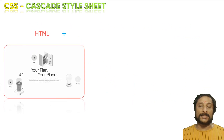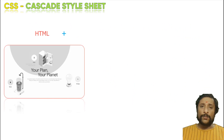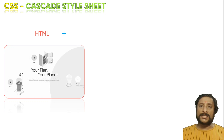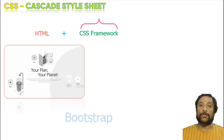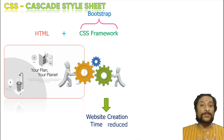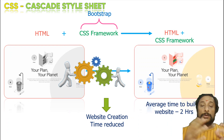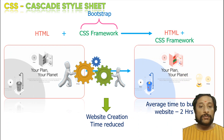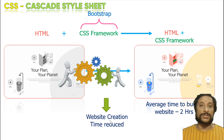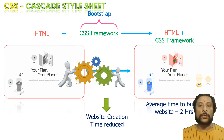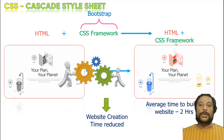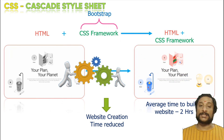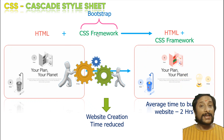If you talk about HTML and CSS — I want this CSS in a much better format — is it possible? So, you have CSS frameworks. CSS frameworks are a group of libraries. They will reduce the website creation time. A 10-hour website, you are able to make it in two hours. HTML with a CSS framework gives you the same kind of output. A typical example of a CSS framework is Bootstrap.